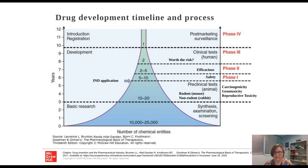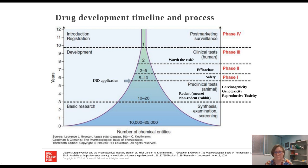If all of these are found to be safe, effective, and worth the risk, then a new drug application is filed with the FDA and analyzed. If approved, they begin registration for their product and post-marketing surveillance, which can last up to 20 years, looking for additional side effects. As you can see, from the initial 10 to 25,000 chemical screenings, there is a great attrition occurring over each of these stages to get one single drug to market.